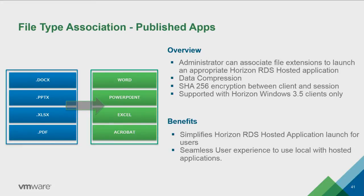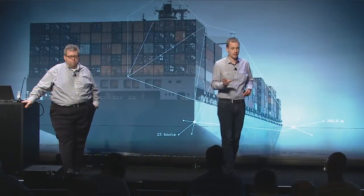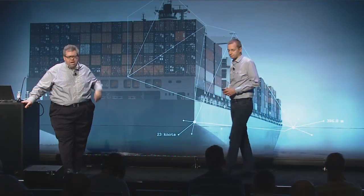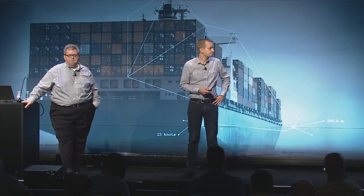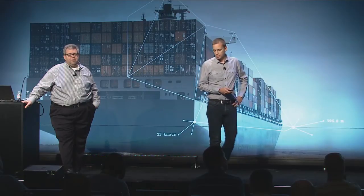File type association — I've been waiting for this one. If you're using PowerPoint as a published application in RDSH and you double-click on a PowerPoint file on your local machine, it will launch that file in your RDSH session. You need Horizon client 3.5 to use this. The Horizon client just has to be present — you don't have to be logged in; if you're not logged in it will prompt you. This is Windows client only.